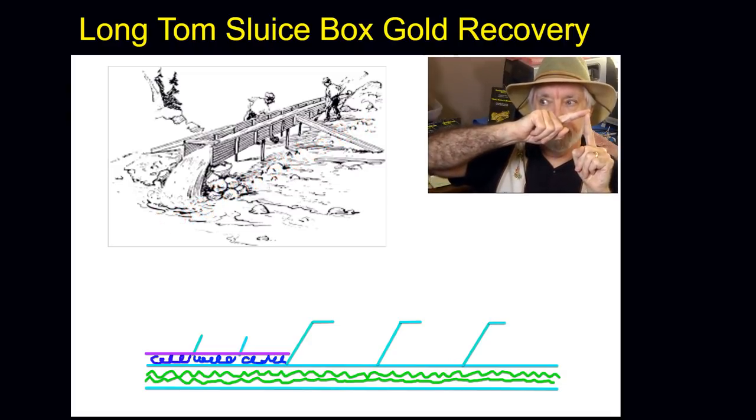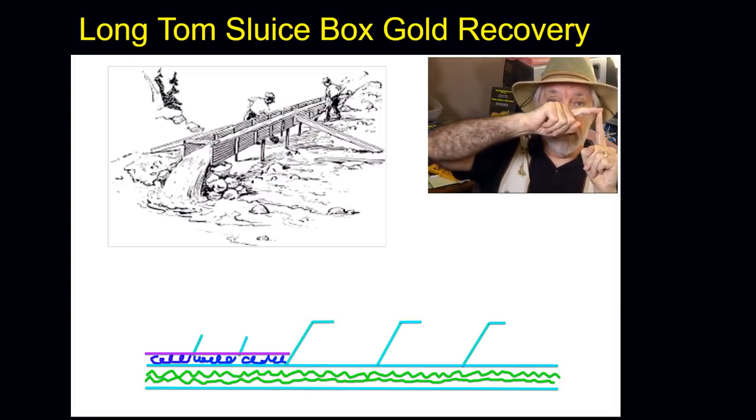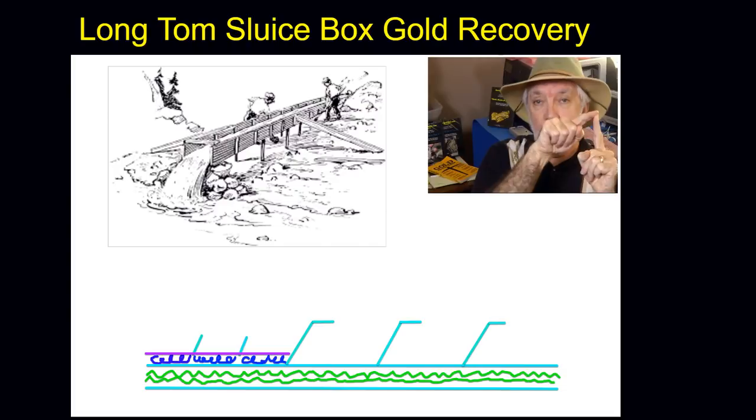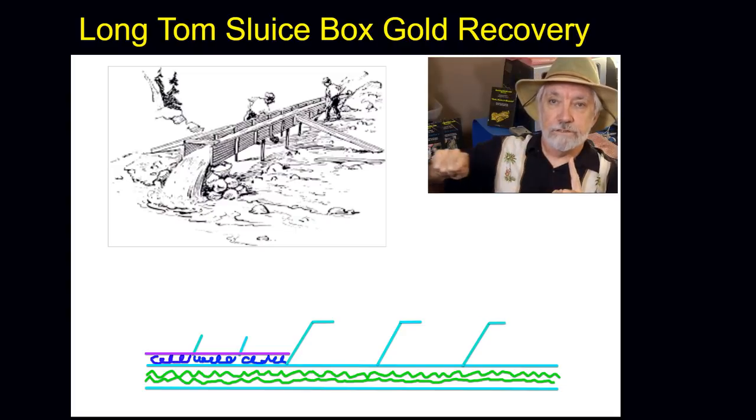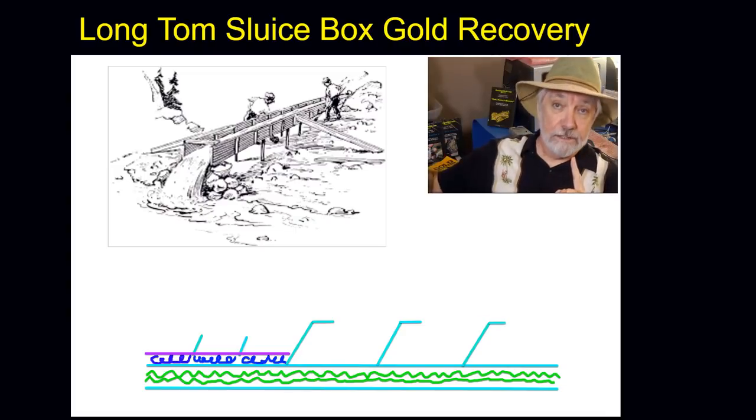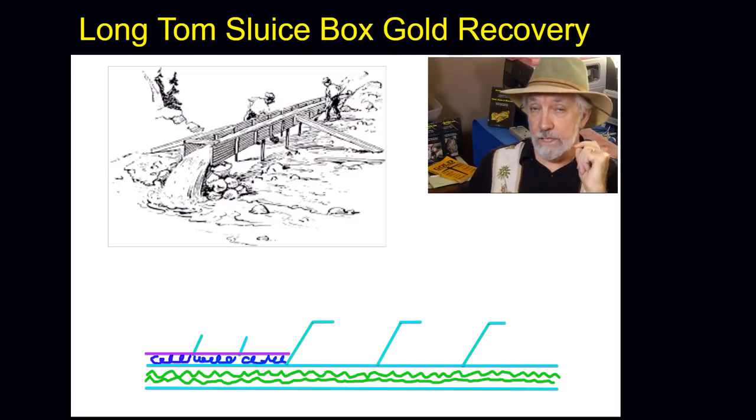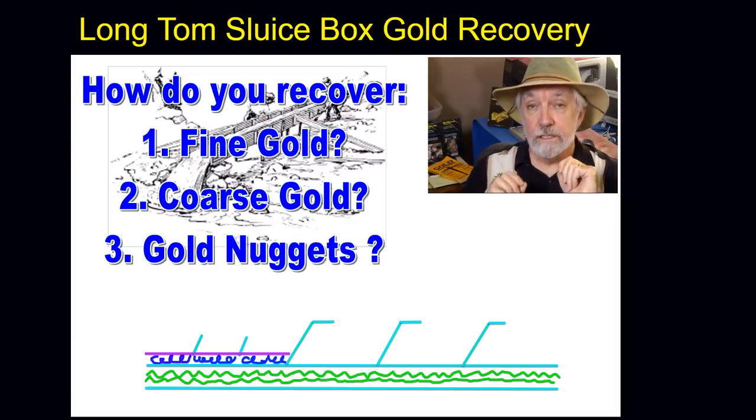If you recall from two nights ago, we were talking about sluices and how the gold drops. Coarse gold drops very rapidly, boom. Finer golds drift further downstream and the finest of all drift four feet before they go to the bottom in the same current.